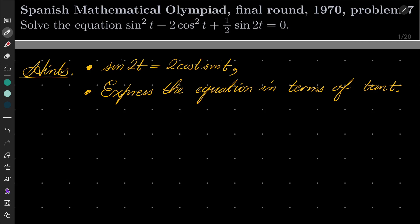We wish to solve the following equation: sin²t - 2cos²t + ½sin(2t) = 0.